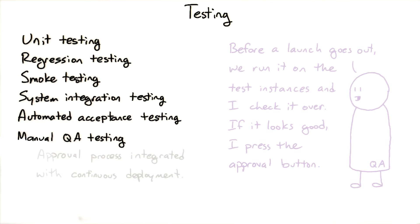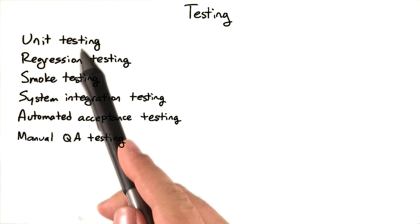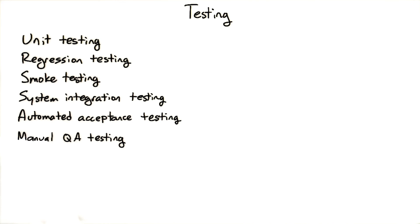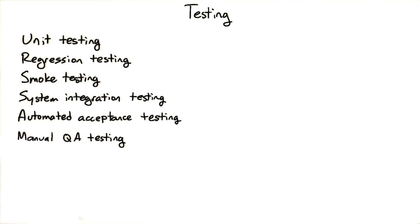So there we have six different kinds of testing: unit testing, regression testing, smoke testing, system integration testing, and automated and manual acceptance testing. But while we're talking about testing, let's talk about bugs too.